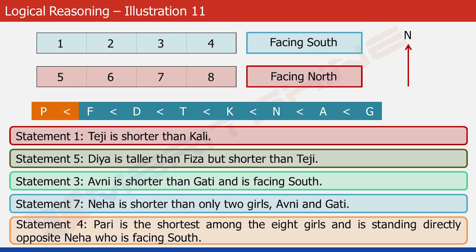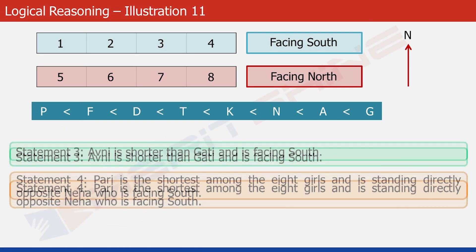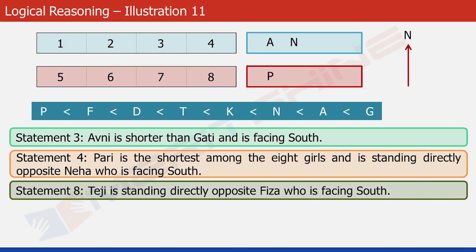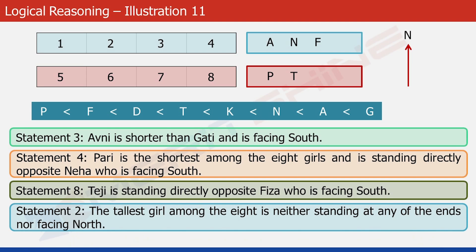The next task is to separate the girls who are facing south from the girls who are facing north. Statement three tells us that Avni is facing south, so let's write A in the south-facing block. Statement four tells us that Neha is also facing south, so let's write N beside A. Statement four also tells us that Pari is standing directly opposite Neha, meaning Pari has to be facing north. Statement eight tells us that Fiza is facing south, so let's write F in the south-facing block. And since Teji is standing directly opposite Fiza, she has to be facing north. Statement two says the tallest girl is not facing north — the tallest is G, that's Gatti — so she has to be facing south.